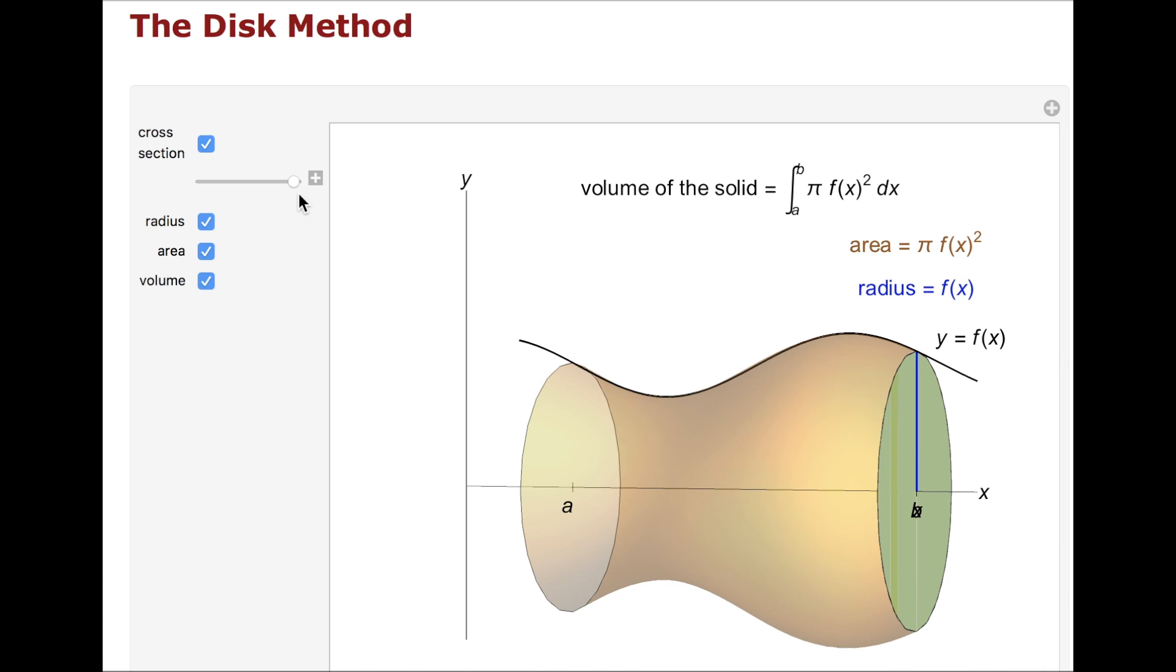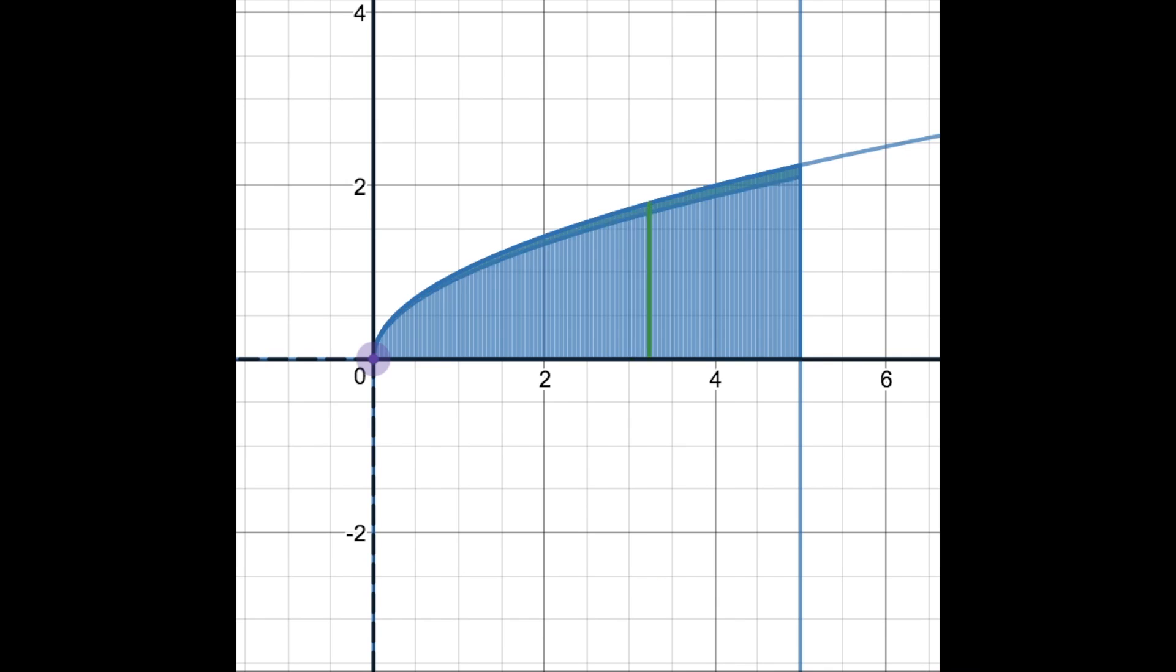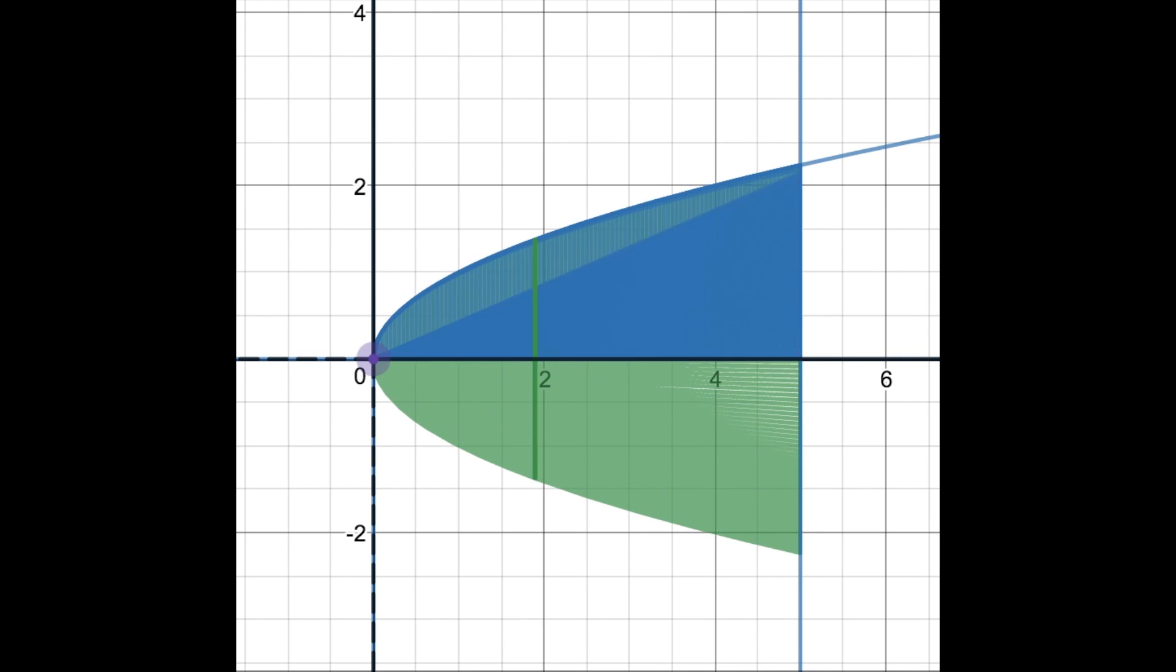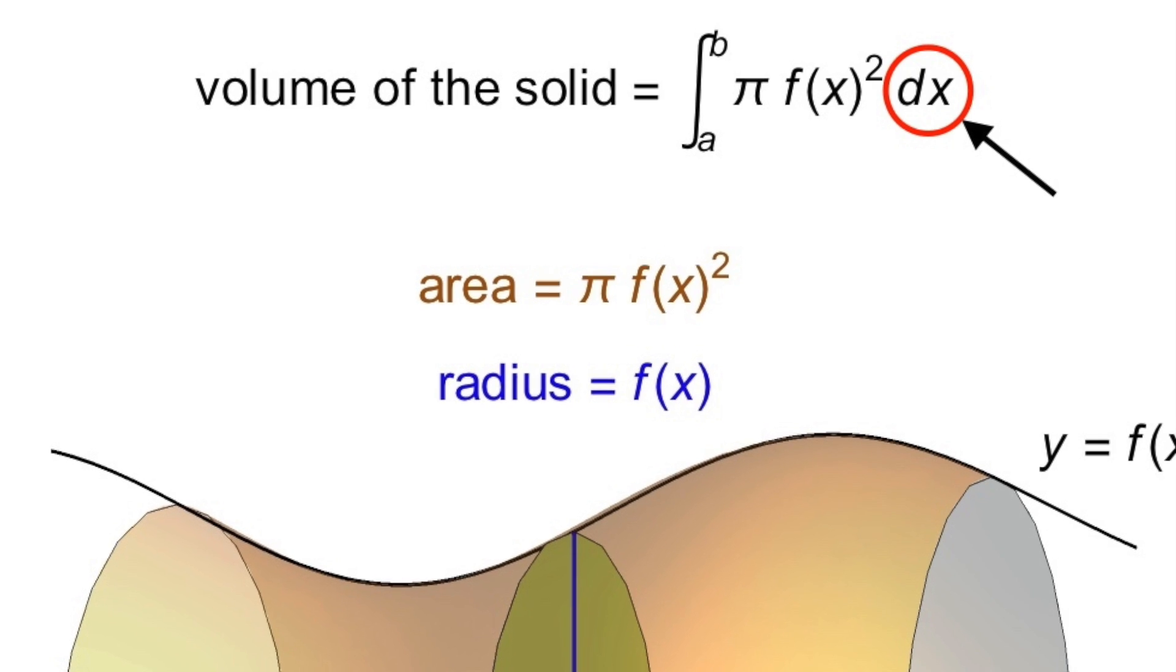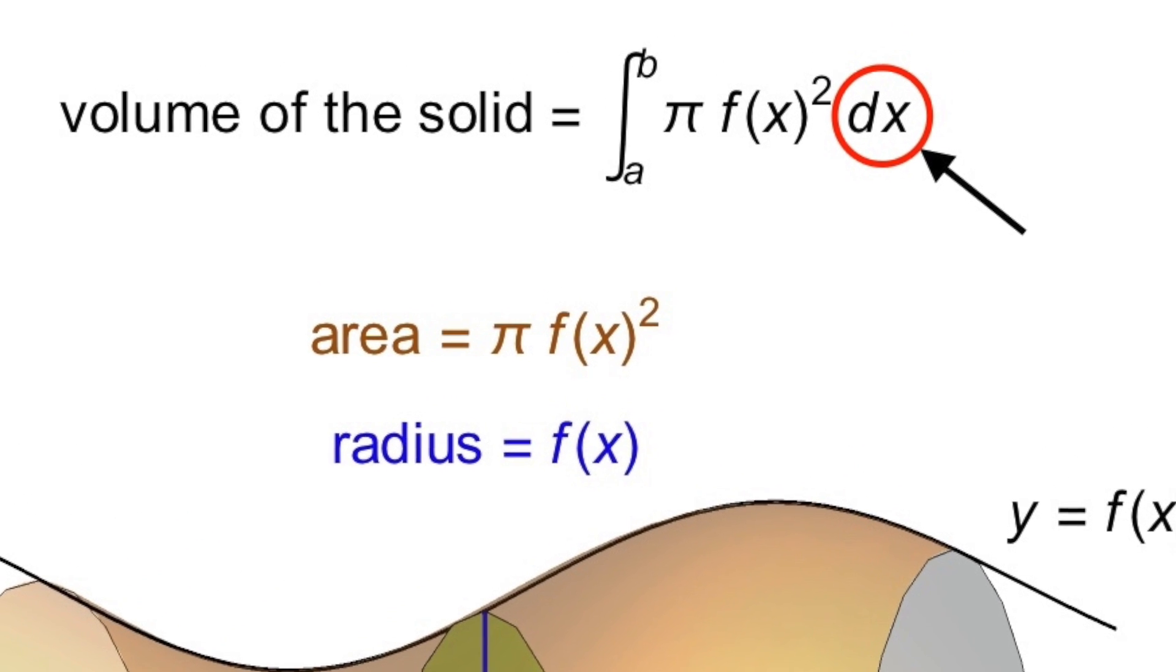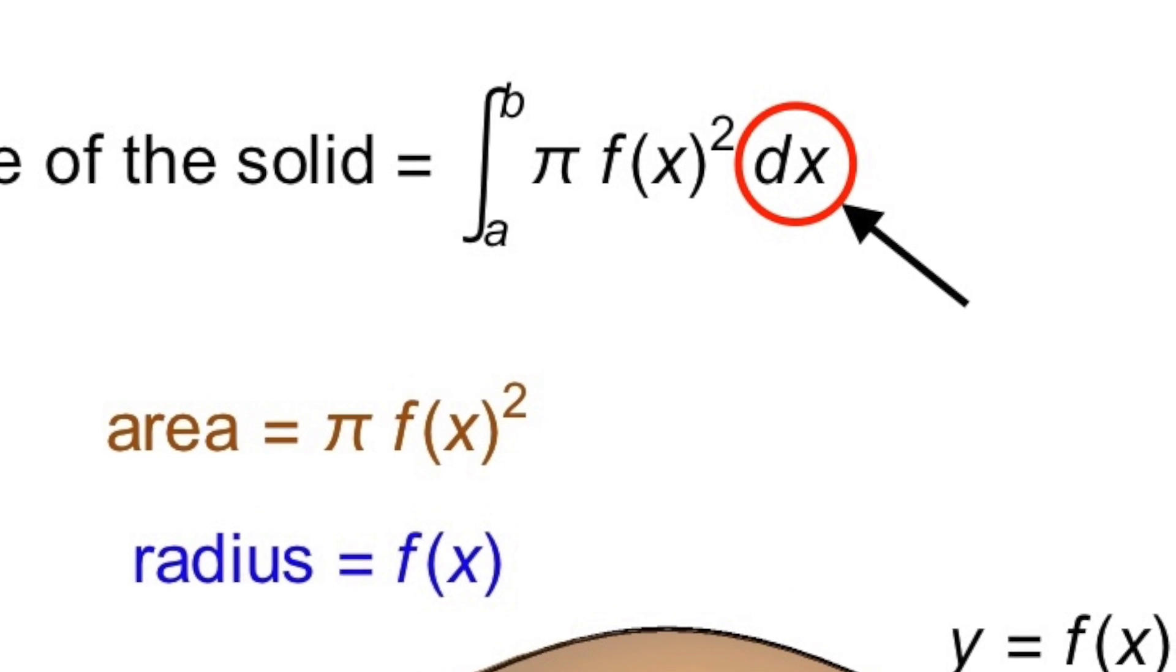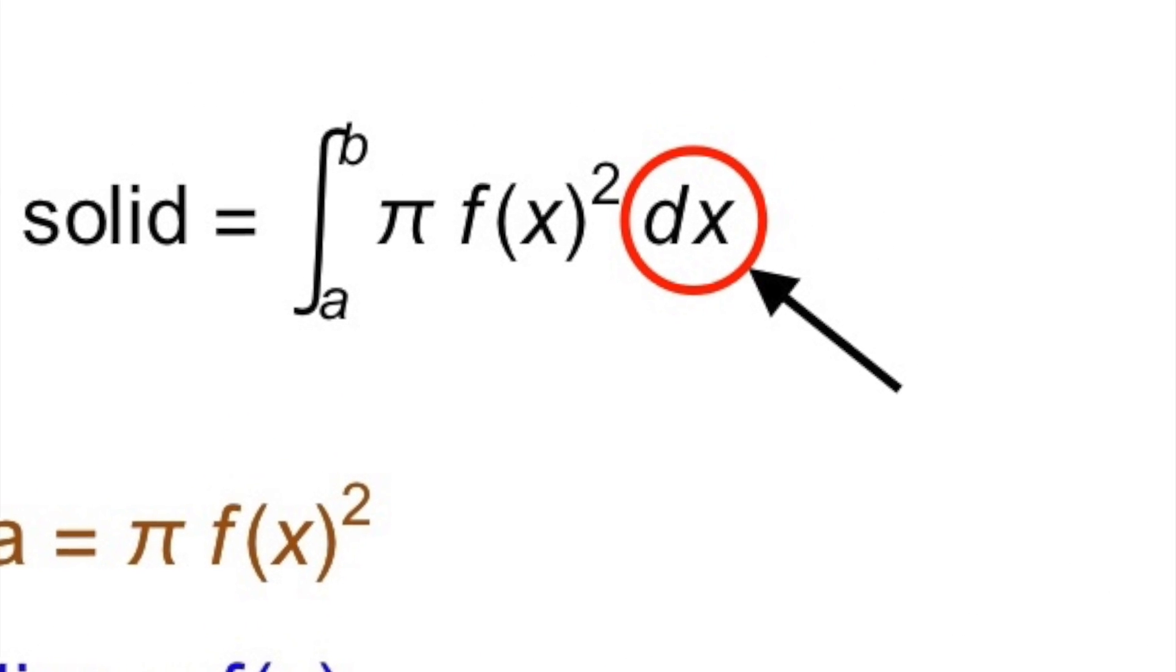Just like finding the volume of a disk or a cylinder, the area of a circle or cross-section has to be multiplied by its corresponding height in order to get the volume. And in our formula, our dx or our change in x is actually going to be the height.